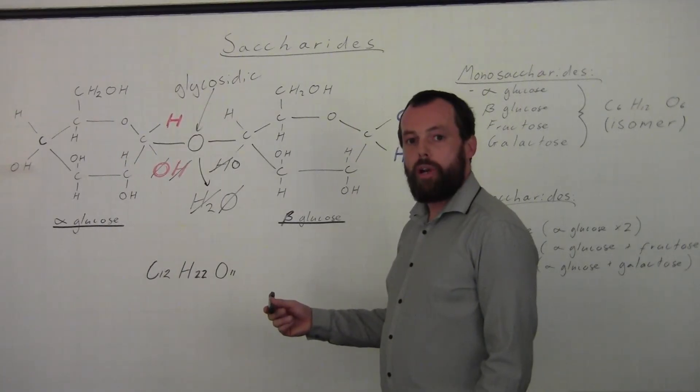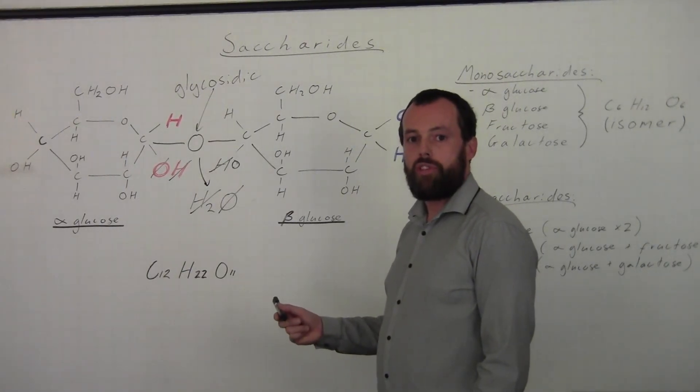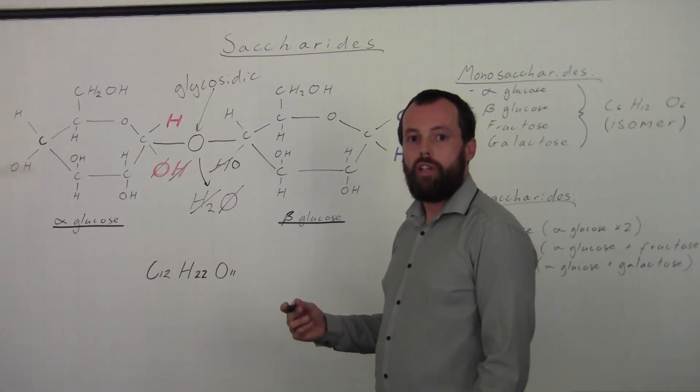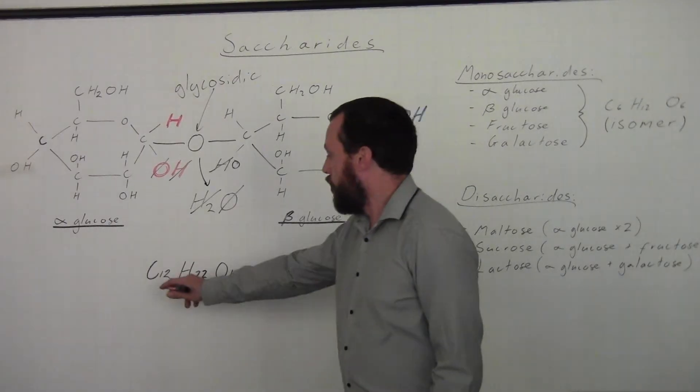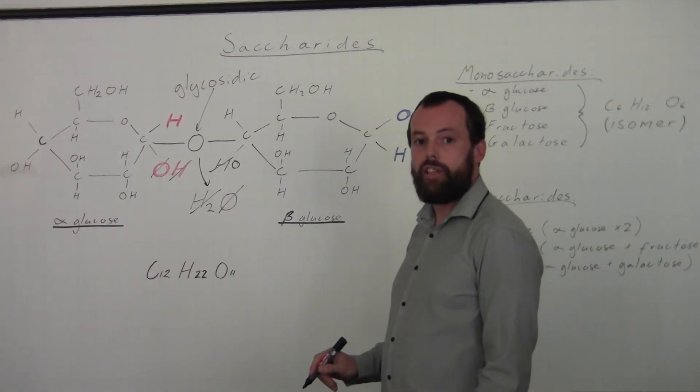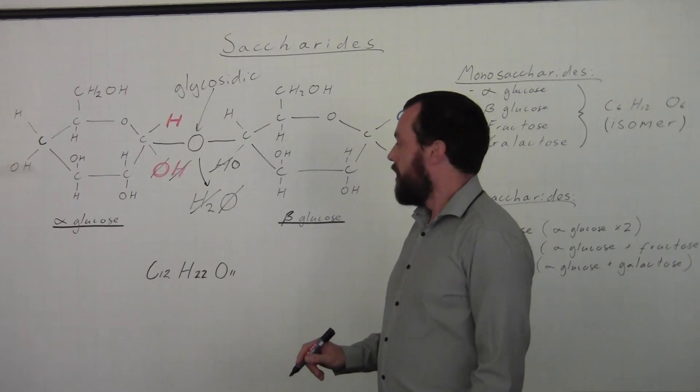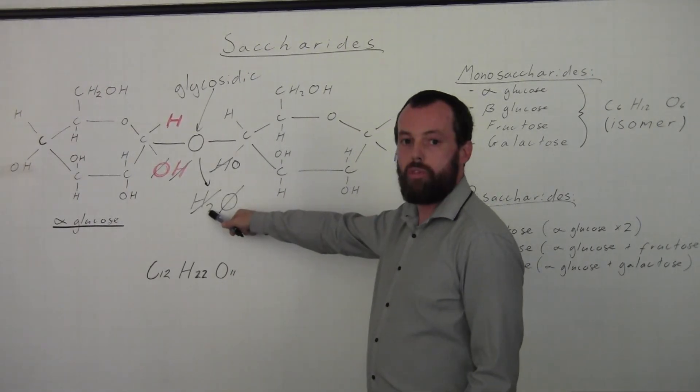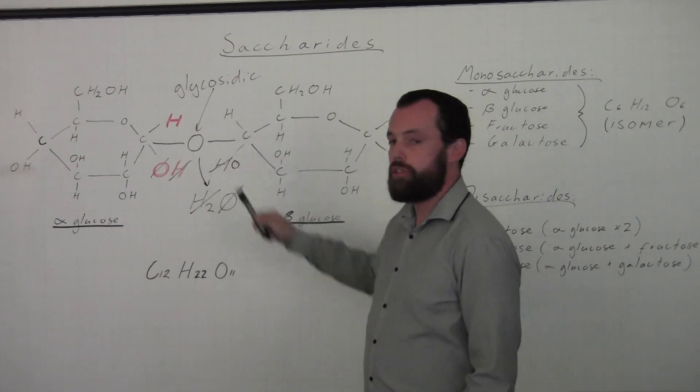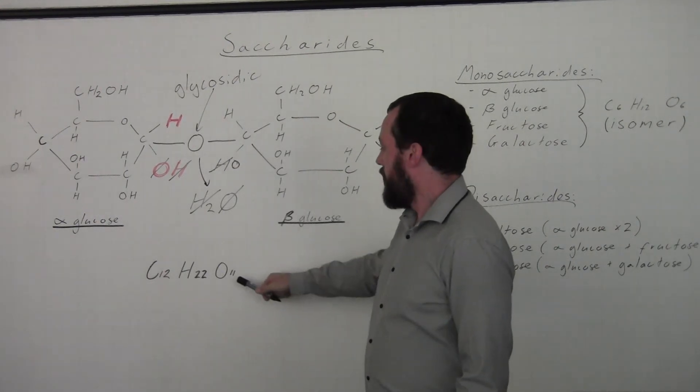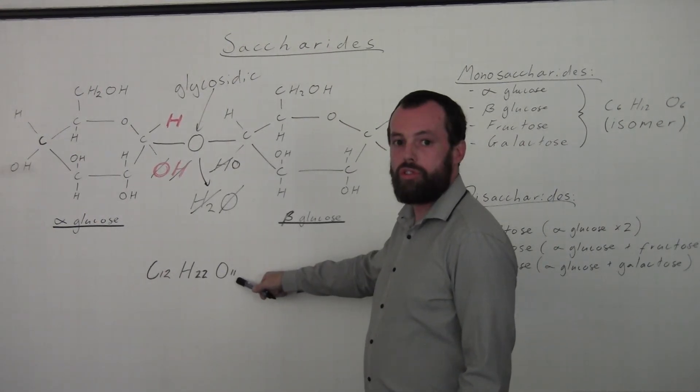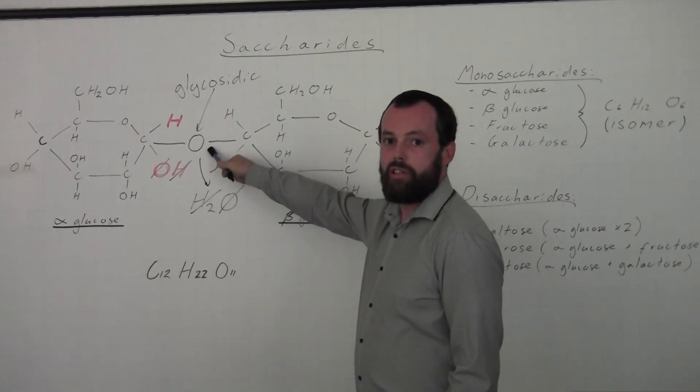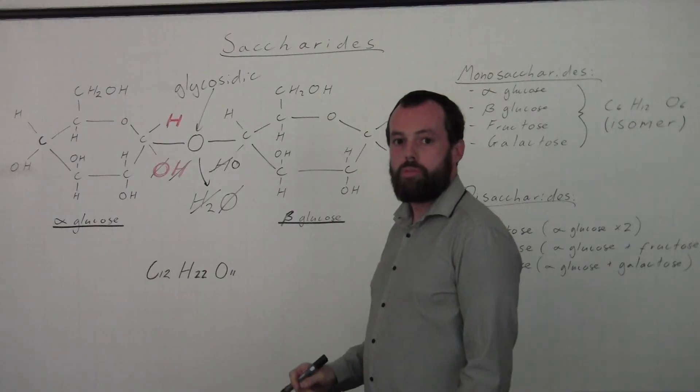What often catches people out as well is they ask for the chemical formula of a disaccharide, and often people will just double the formula of a monosaccharide. Now that's not the case. This is the formula for any disaccharide because the hydrogen doesn't double - we've used some of it in the water, so it's not present in the disaccharide. And again, the oxygen doesn't just double because although one oxygen does remain in the disaccharide, the other oxygen has been used in the production of water.